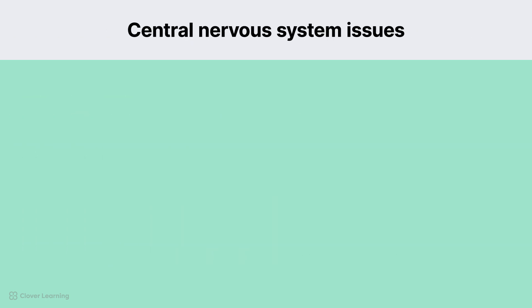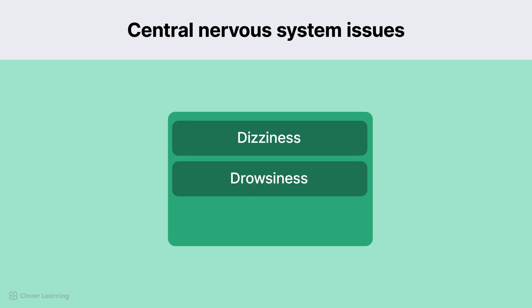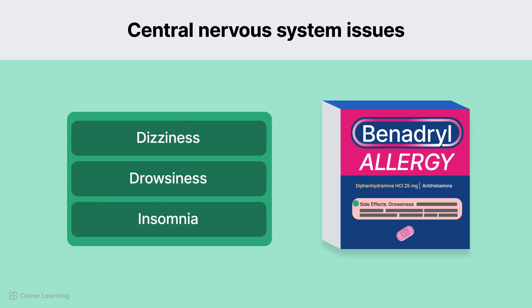Central nervous system issues include dizziness, drowsiness, or insomnia. For example, the antihistamine Benadryl is known to cause drowsiness.